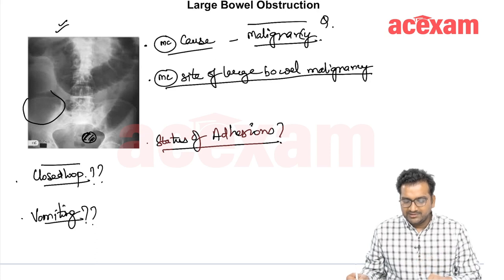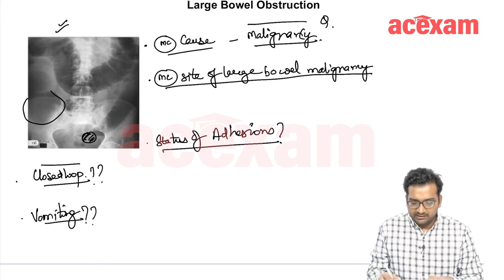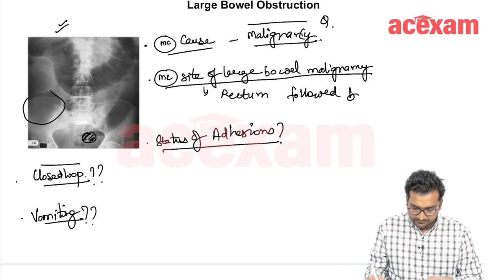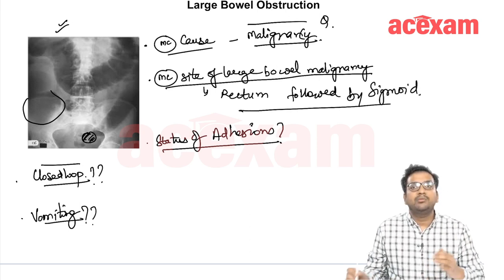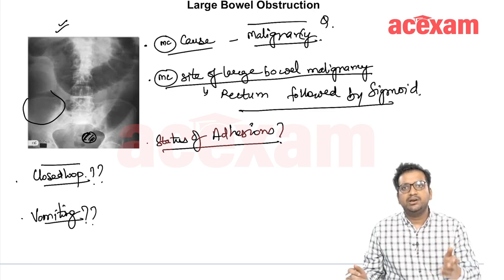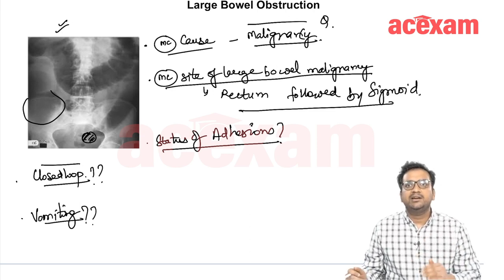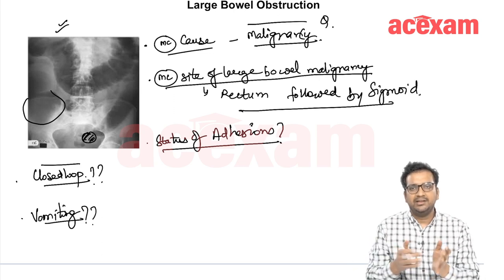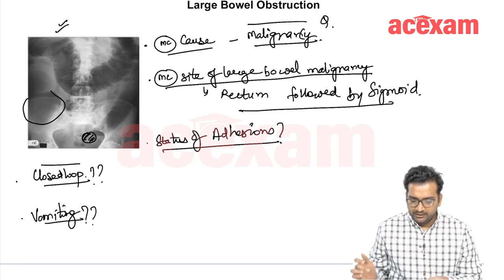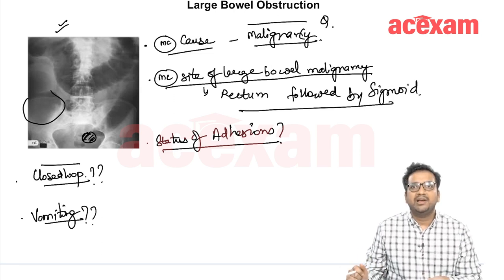What is the most common site of large bowel malignancy? It is rectum followed by sigmoid. Generally, the malignancy is most commonly at the recto-sigmoid region. Among the rectum and sigmoid, it is mainly rectum followed by sigmoid. Generally they give recto-sigmoid as an option, so that will be the correct option. That is the most common site of large bowel malignancy.